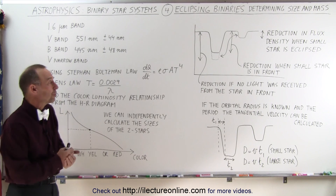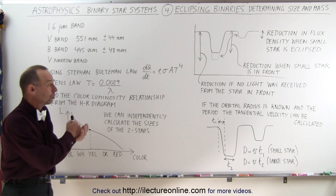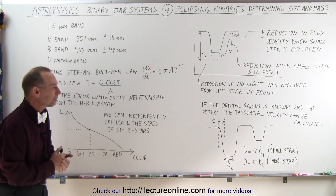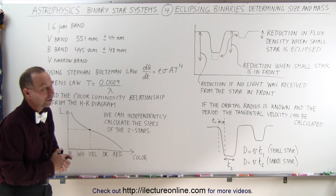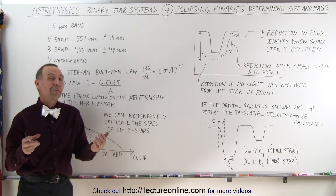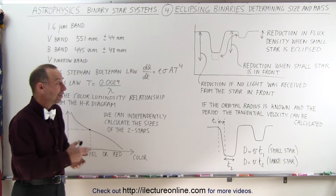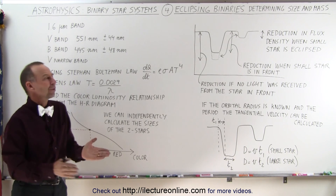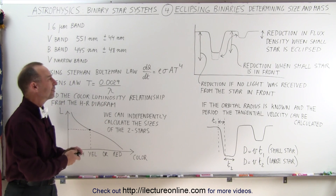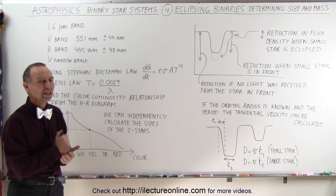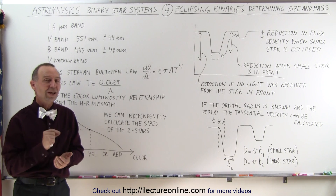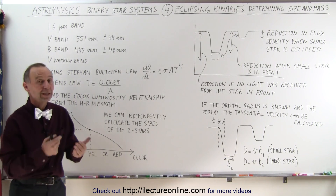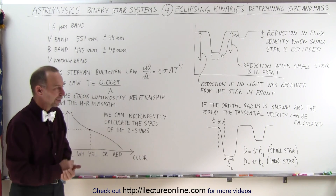So those are some of the techniques we use to determine the mass and size of the stars in eclipsing binaries. You'll want to see some examples of how we exactly do that to get more of a feel for it, but at least at this point you have some good ideas of the different techniques used to determine the mass and size of the various stars in eclipsing binaries. And that's how it's done.